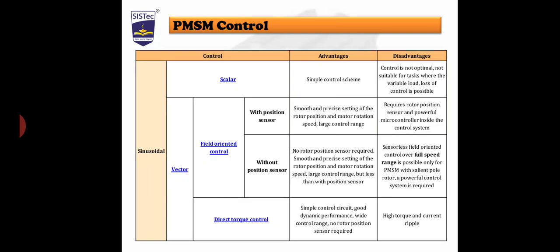The drawback of sensorless field oriented control is that operation over the full speed range is possible only for permanent magnet synchronous motors with a salient pole rotor, and a powerful control system is required, making it costly. For direct torque control, the advantages are a simple control circuit, good dynamic performance, wide control range, and no rotor position sensor is required.